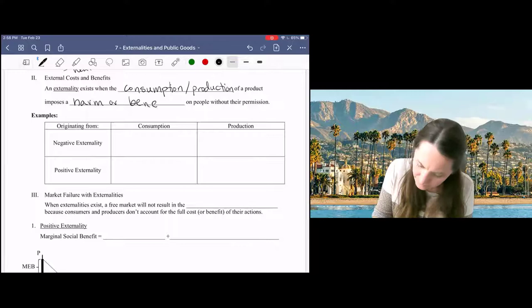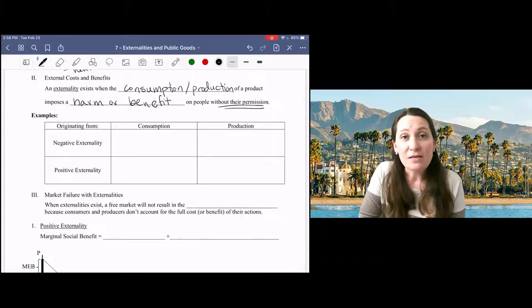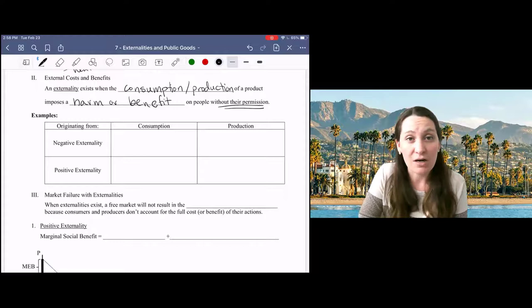And this is the key part here that these benefits and harms occur without the input or permission of the people being harmed or benefited.